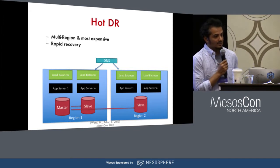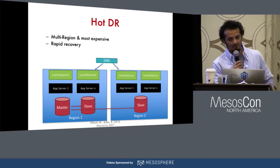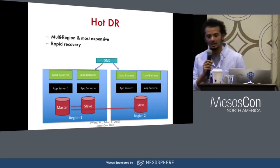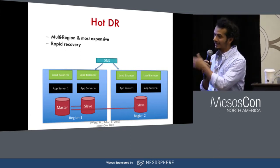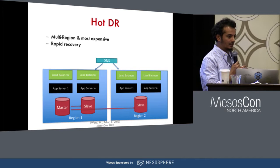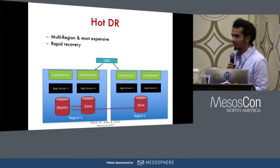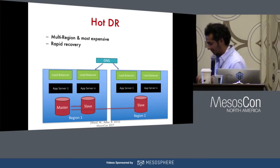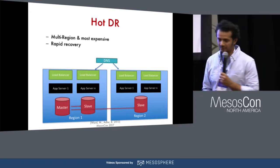Hot DR is exactly similar to what you do in the traditional environment — you have everything up and running in both regions across multiple zones, and you're doing a rival application. You're not getting much cost benefit, but somebody who wants rapid recovery and an RTO close to zero would pay for this approach. If you have a critical application — for example, financial — you basically go with this approach.